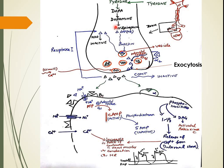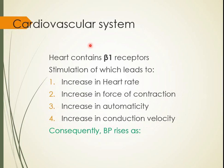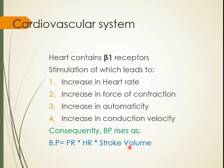In summary, beta-1 receptor stimulation by positive inotropic drugs increases heart rate, force of contraction, automaticity, and conduction velocity of the heart, leading to increased blood pressure. This is why inotropic drugs are needed in the management of shock.